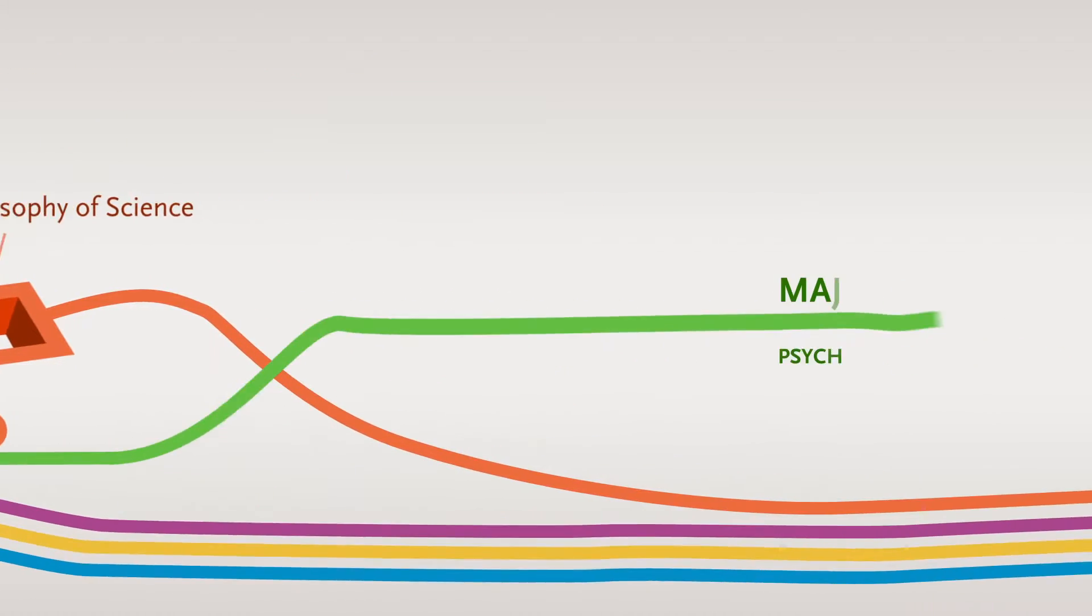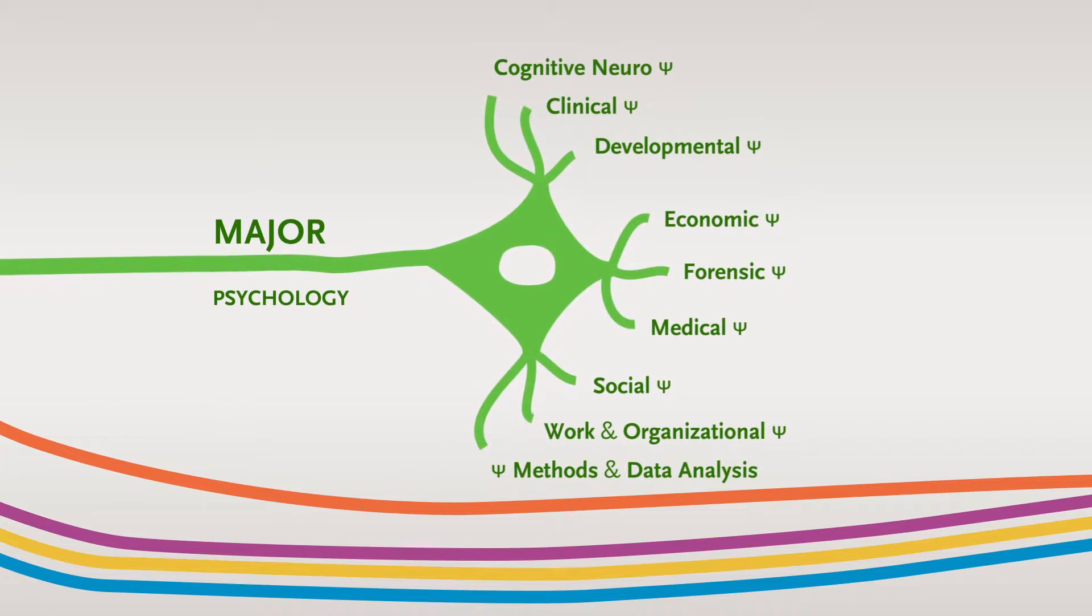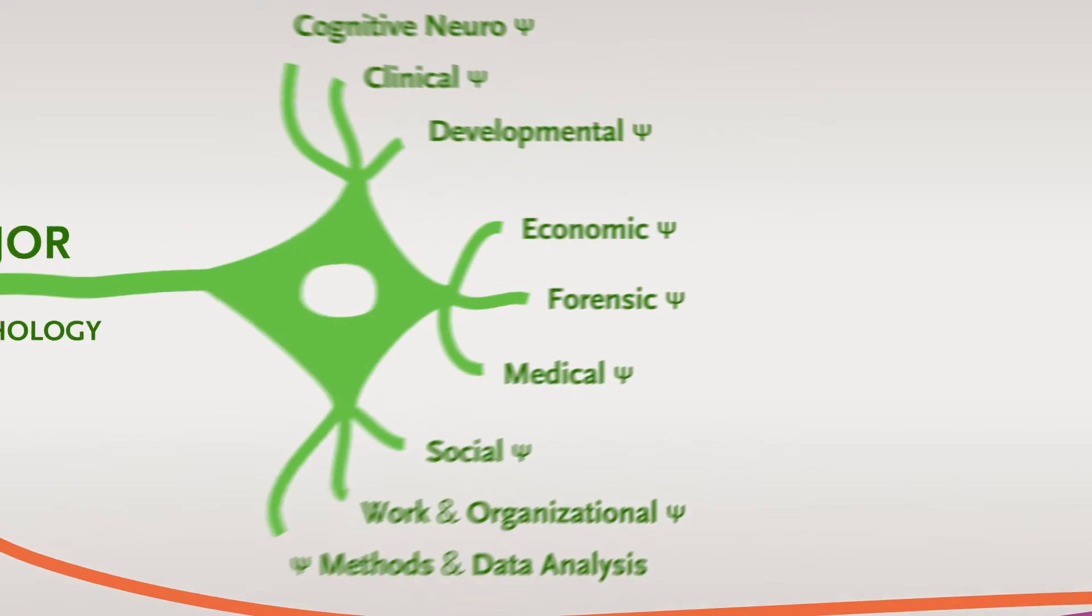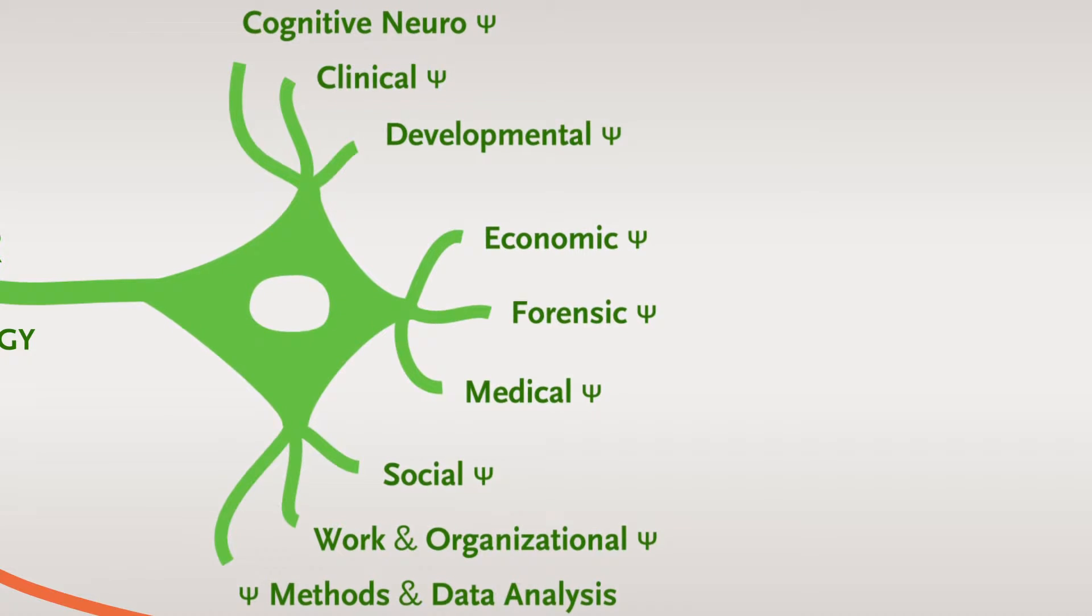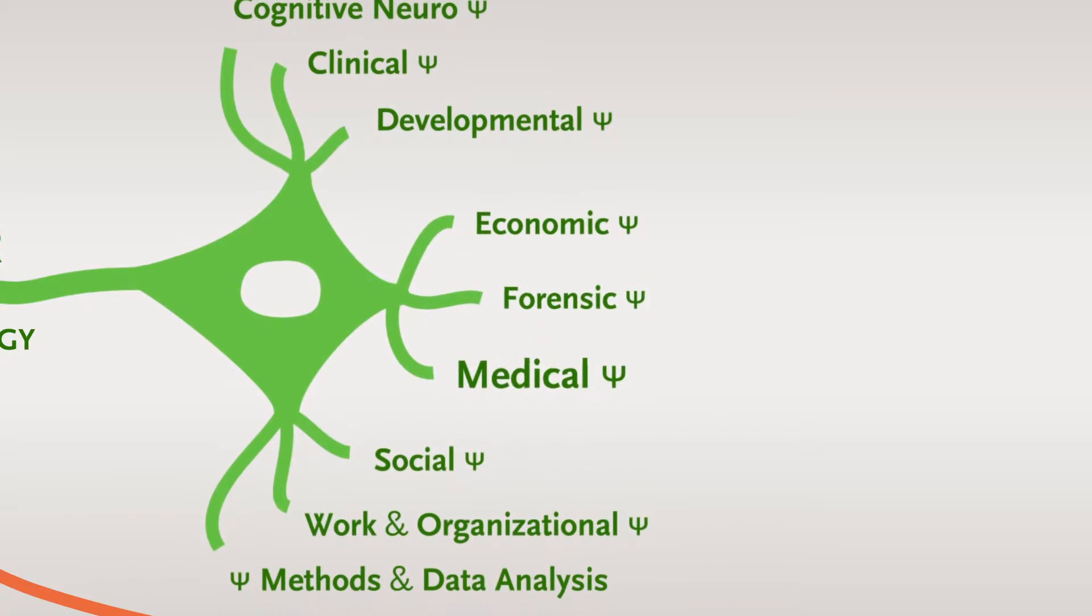The second learning trajectory is that of your major, the specialisation that you choose yourself. We are the only university in the Netherlands that offers you a choice of nine majors to specialise in. Three of these majors are absolutely unique in the Netherlands: Economic, Forensic and Medical Psychology.